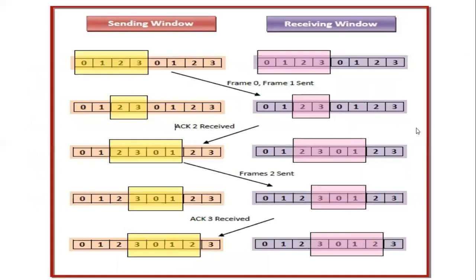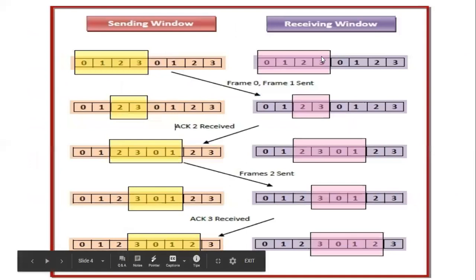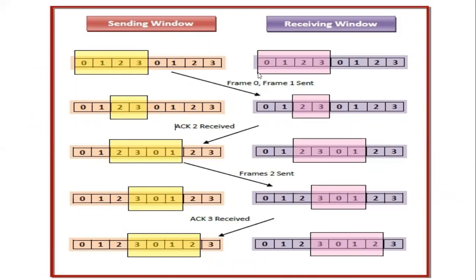Now let me explain how the sliding window protocol works with an example. On the sender side and receiver side, if the frame size is 4, the sequence numbers are 0, 1, 2, 3. Whatever the sender sends, the receiver will receive the same. If the sender wants to send only frame 0 and frame 1 — only these 2 — we remove those 2 frame sets.